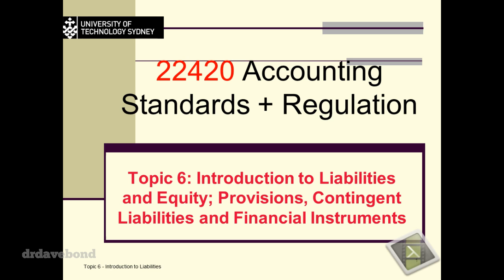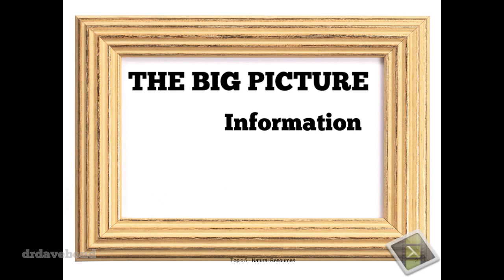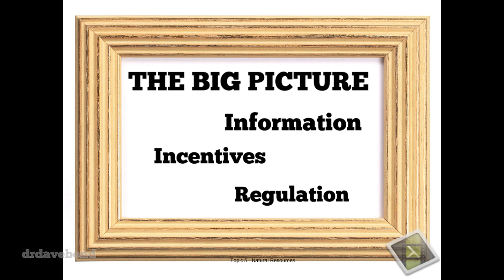We're only having a sneaky look at financial instruments this week. There is a huge amount to accounting for financial instruments — even in this subject we're going to barely scratch the surface. Before we get there, the bigger picture: what we're thinking about is information, incentives, and regulation. We're turning now to the other side, thinking about liabilities and what some of the issues are in relation to these aspects.